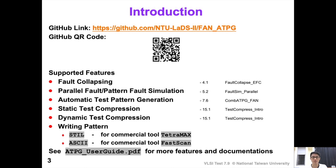We also support writing patterns in various formats. We support the STIL format, which stands for Standard Test Interface Language, for fault simulation with the commercial tool TetraMax. We also support the ASCII format for the commercial tool FastScan. That is, you can use commercial tools to verify the test patterns generated by FAN ATPG. For more features and documentation, refer to ATPG_userguide.pdf, which is included in the GitHub repository.